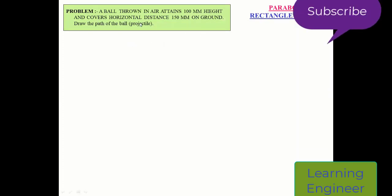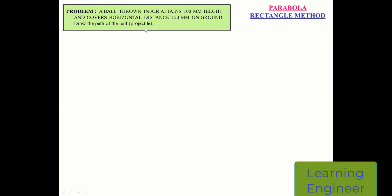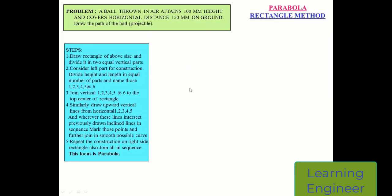In this video, we will see how to draw the parabola by using a rectangle method. The problem is: a ball is being thrown in air, attains 100mm height and covers a horizontal distance of 150mm on the ground. Draw the path of the ball, which is known as projectile, and the projectile will be the parabola. The ball covers 100mm in the vertical direction and 150mm in the horizontal direction.